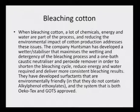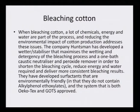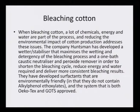While bleaching cotton, a lot of chemical energy and water are part of the process. The company Huntsman has developed a wetter stabilizer that maximizes the wetting and detergency of the bleaching process in one bath — a caustic neutralizer and peroxide remover — in order to shorten the bleaching cycle, reduce energy and water required, and deliver more consistent bleaching results. They have developed surfactants that are environmentally friendly, not containing alkylphenol ethoxylates, and the system is both Echotex and GOTS approved.